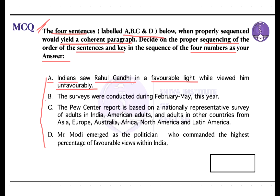The second statement says: 'The surveys were conducted during February to May this year.' This could be indicating a time sequence approach — a timeline is pointed here. This statement is about any of the surveys which were conducted during February or May this year.